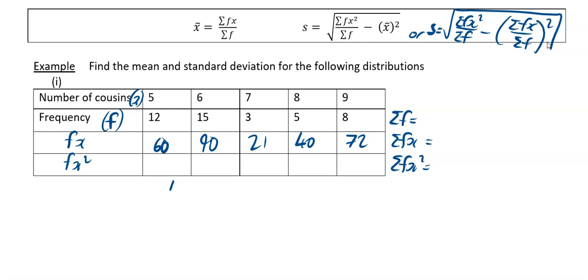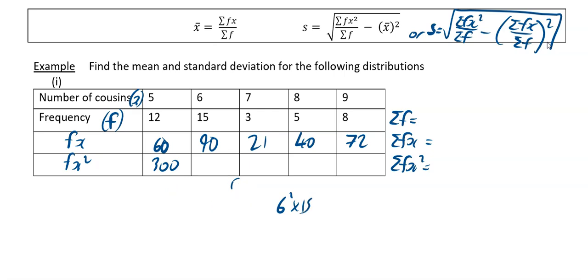We have a trick here to get the fx squared column. To get this one, you've got to square the x value — so it's going to be 5 squared, then multiply it by your f which is 12. And 5 squared times 12 works out to be 300. The next one is 6 squared times 15, and so on. Reading along, we've got 300, 540, then the next one is 147, the next one is 320, and the next one is 648.